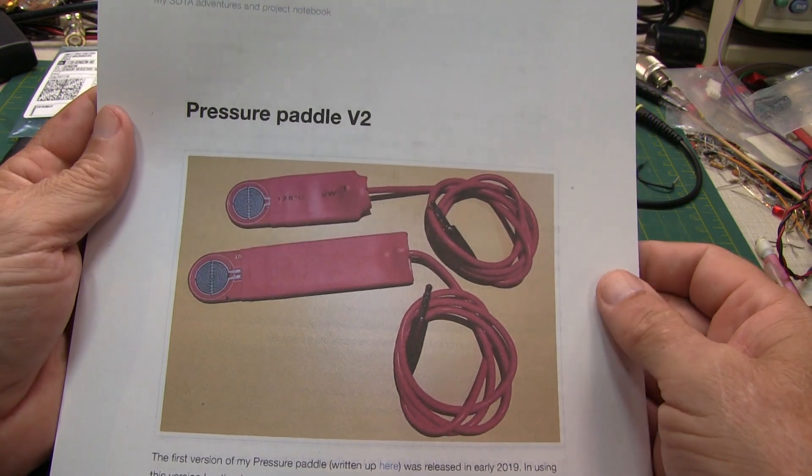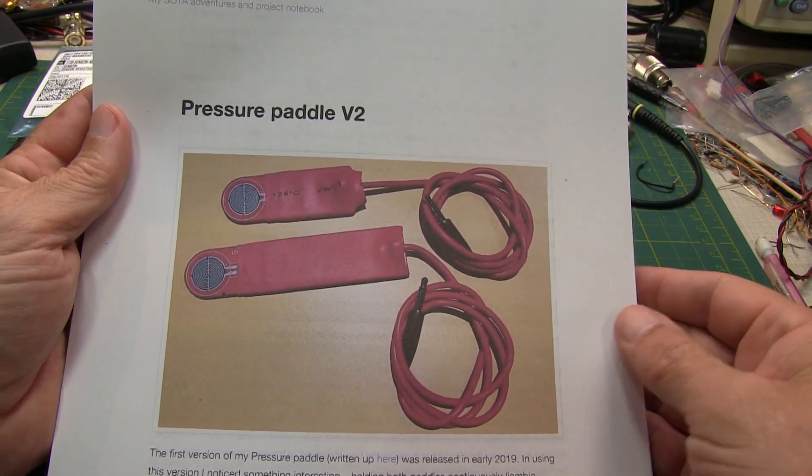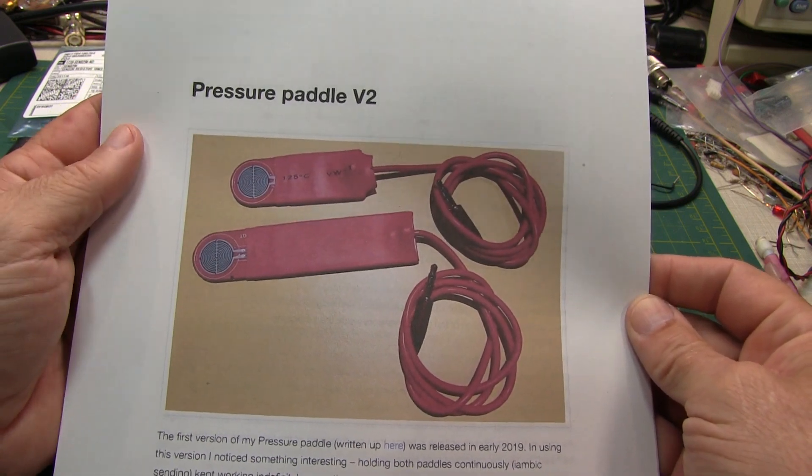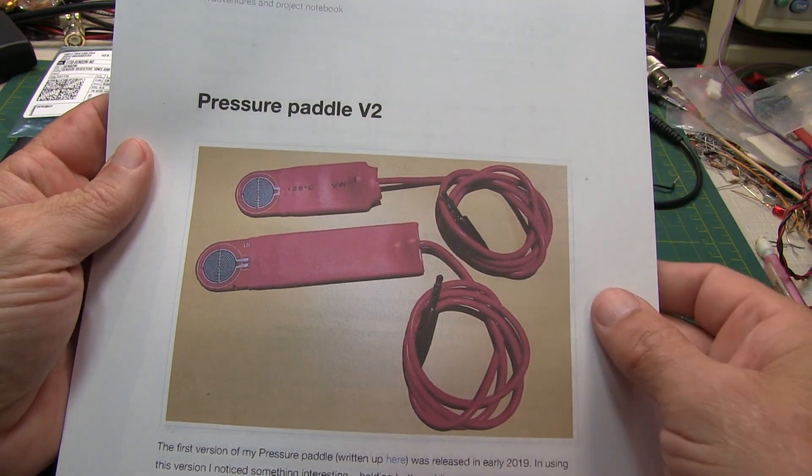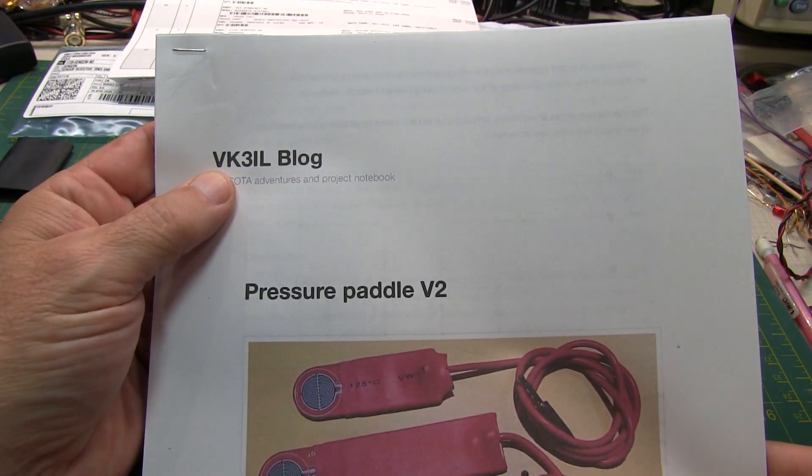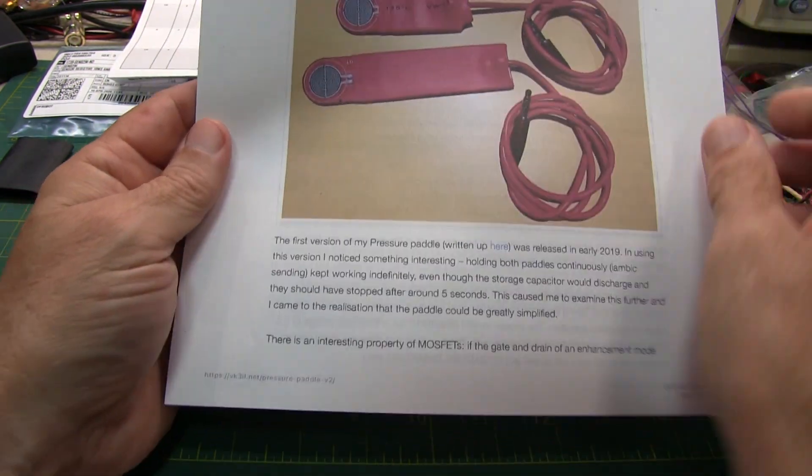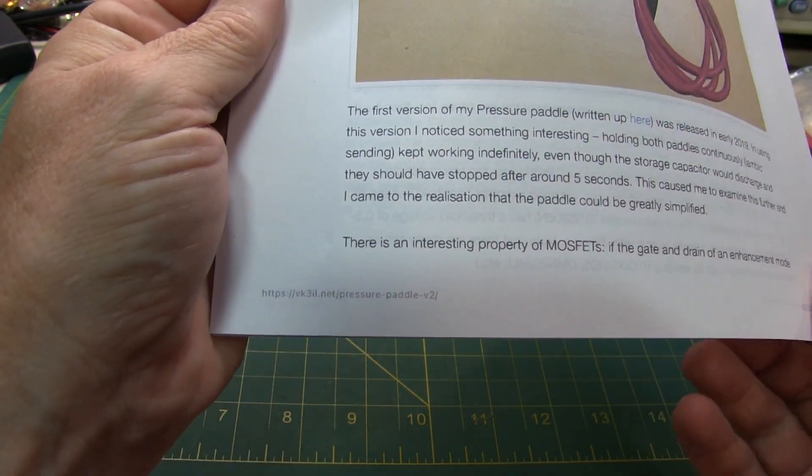So it's really nice to pack into a kit that you might bring out to the field or up to a summit to go play amateur radio. Now all the information to put together one of these paddles in terms of what to get and things like that can be found in this blog from VK3-IL, and I'll put this link down in the video description below so you can go find that.